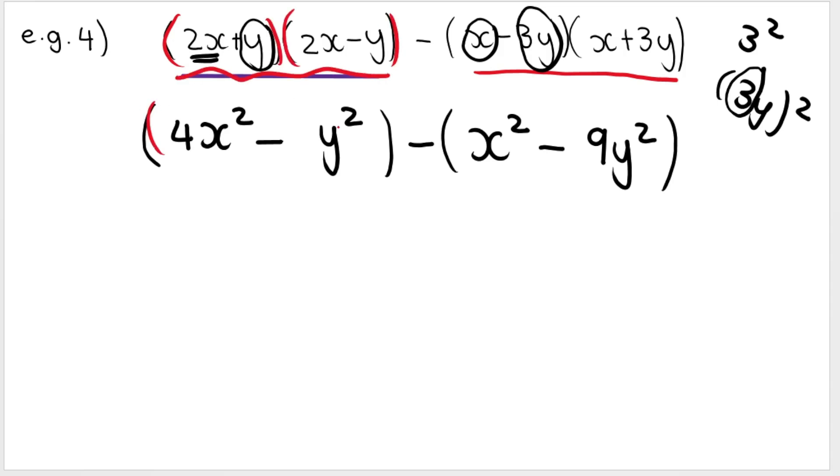Then because we had two brackets or two terms here to start with, this is going to give us one term here in its own bracket. This is going to give us another essentially. And then we need to multiply that negative into the second bracket. So the first bracket stays the same. 4x squared minus y squared. That's going to become negative x squared. If you multiply a negative into a bracket, the sign of everything changes. Negative x squared and positive 9y squared.